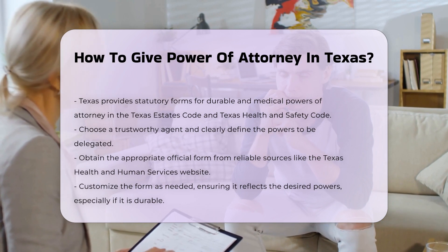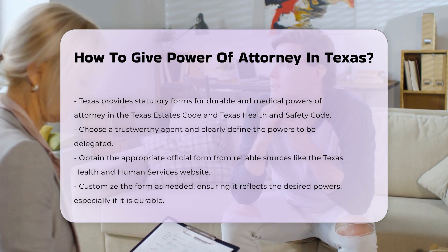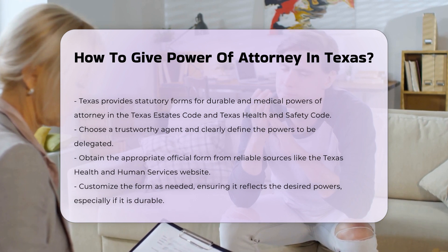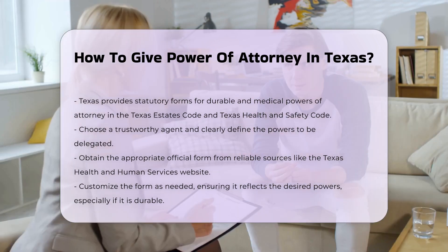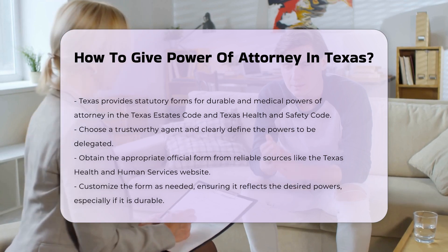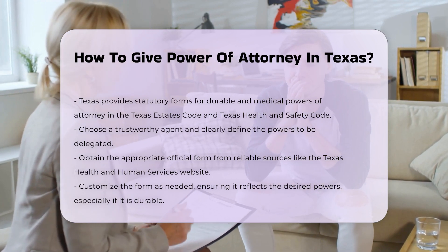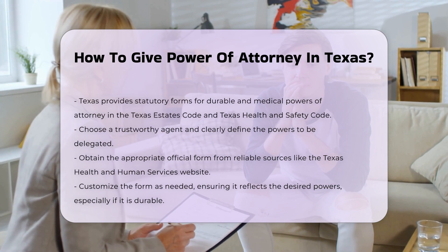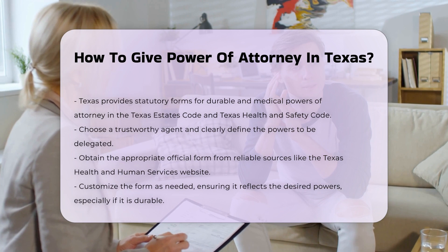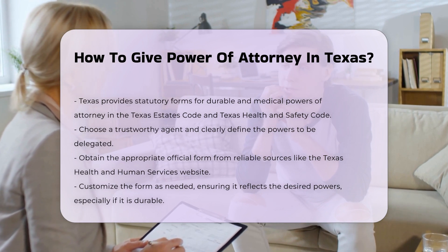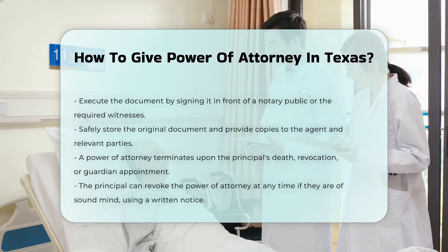Steps to create a power of attorney. First, decide on powers and choose an agent: determine the specific powers you want to delegate and select a trustworthy agent. Second, obtain the appropriate form from the Texas Health and Human Services website, a legal library, or an office supply store. Third, customize the form by making any necessary adjustments to the standard language, such as specifying that the power of attorney is durable.